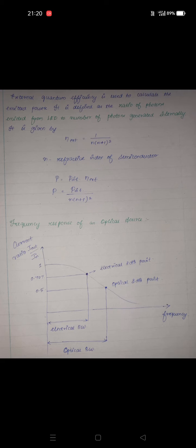The external quantum efficiency formula is: η_external = 1 / (n × (n + 1)²), where n here represents the refractive index of the semiconductor material used to construct the LED. The total optical power output is then P = P_internal × η_external = P_internal / (n × (n + 1)²).